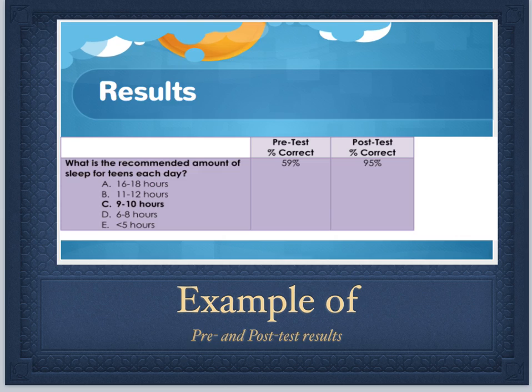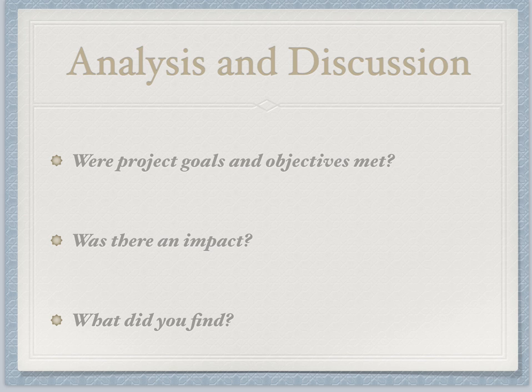Then your results could also look like this. This is an example of pre and post-test results — very raw data. They went ahead and put the question on the left-hand side and then did two columns for pretest and posttest correct. As you can see, if you're just quickly glancing at it, you can get an idea that there was a difference, there was a degree of change in the work that they did after their intervention.